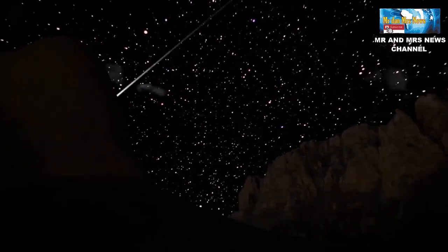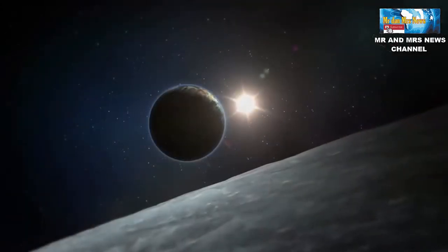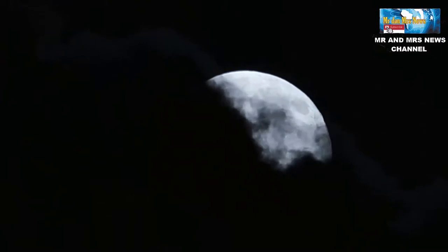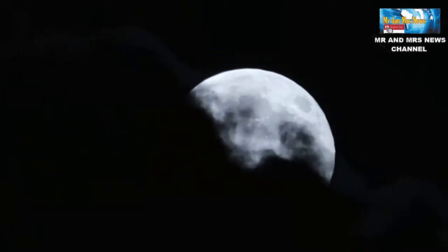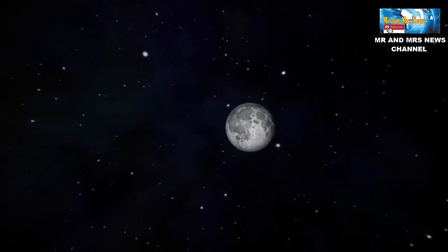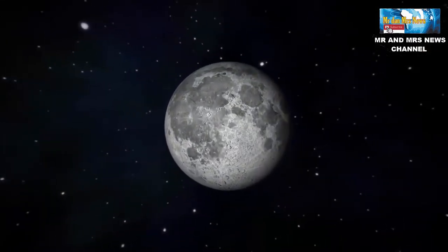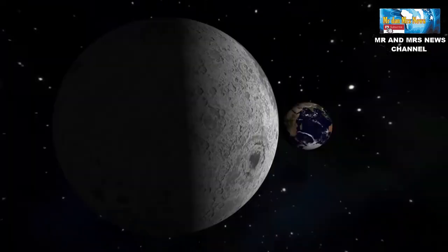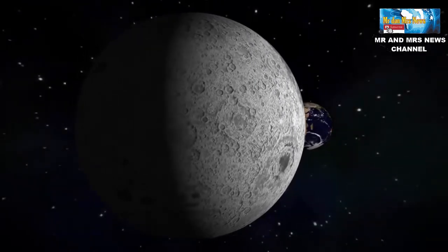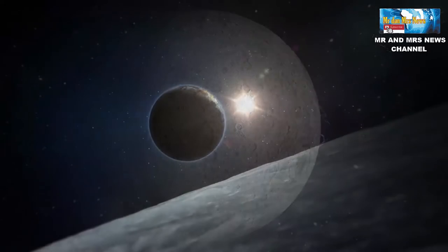Bulan adalah satelit alami bumi satu-satunya dan menjadi satelit terbesar kelima dalam tata surya. Berdasarkan ukuran planet, bulan dengan diameter 27% dan kepadatan 60%. Bulan disebut sebagai satelit bumi karena bergerak mengelilingi bumi. Diperkirakan terbentuk sekitar 4,51 miliar tahun yang lalu, tidak lama setelah bumi.